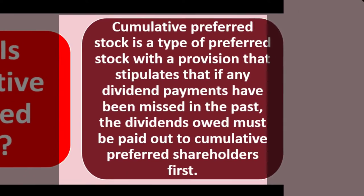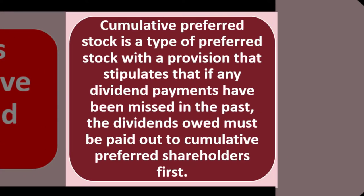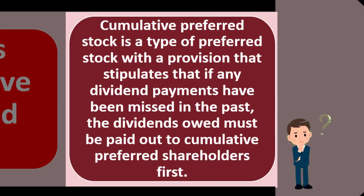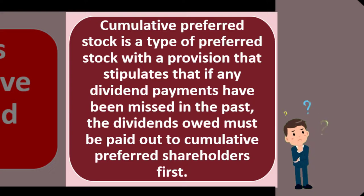Now we're adding the component of 'cumulative' to preferred stock. Cumulative preferred stock is a type of preferred stock with a provision that stipulates that if any dividend payments have been missed in the past, the dividends owed must be paid out to cumulative preferred shareholders first. When we think about dividends, that's a payout from the corporation to the owners — typically shareholders.